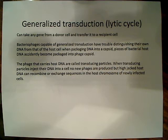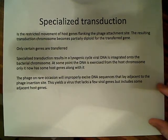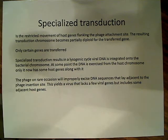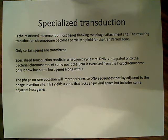The bottom line for generalized transduction is it involves the lytic cycle and can take any gene from a donor cell. In contrast, specialized transduction means there is a restricted movement of host genes — specifically only certain genes flanking the phage attachment site. So we can no longer take any gene; only certain genes adjacent to that specific attachment site. The resulting transduced chromosome becomes partially diploid for the transferred genes, and hence the name, only certain genes are transferred.